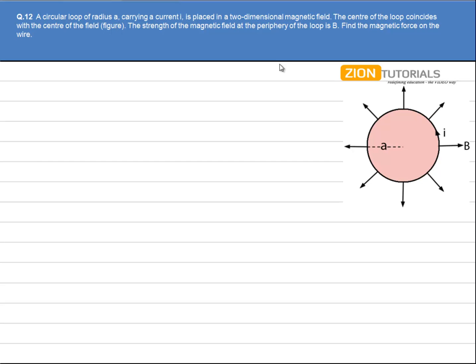A circular loop of radius A carrying current I is placed in a two dimensional magnetic field. The center of loop coincides with the center of the field. The strength of the magnetic field at the periphery of the loop is B. Find the magnetic force on the wire.